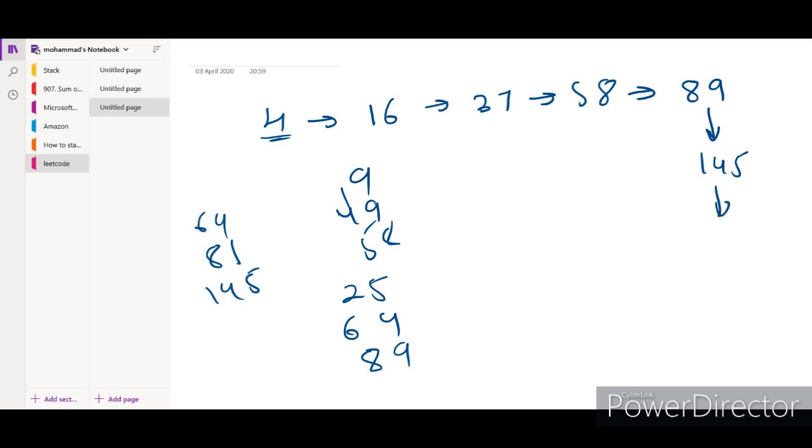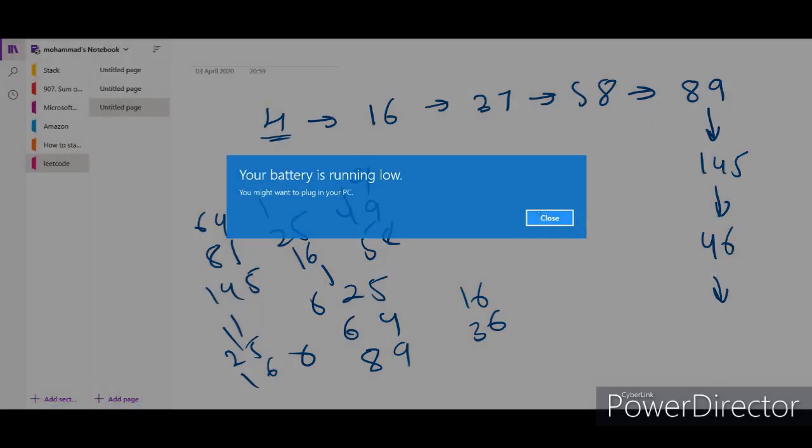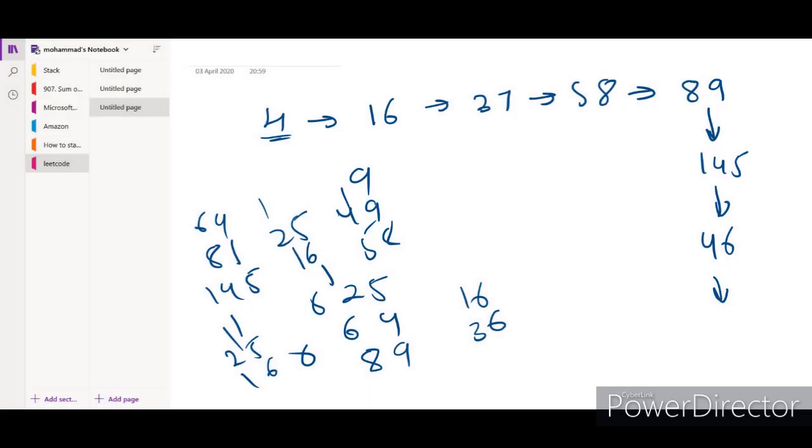Then next we get 1 + 16 + 25... wait a second, 1 + 16 + 25 equals 42. This is 42.